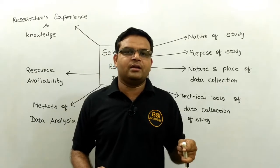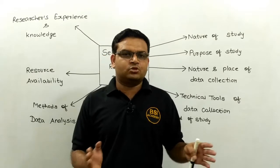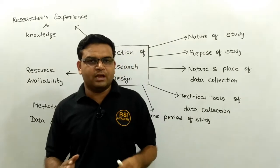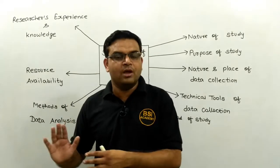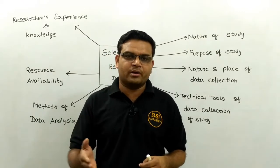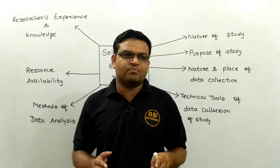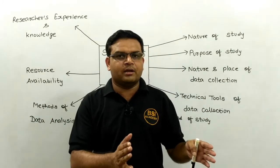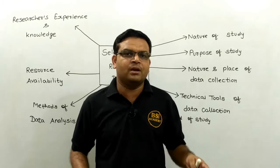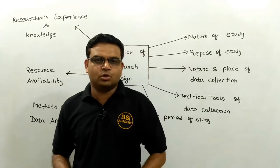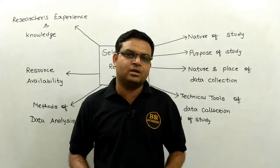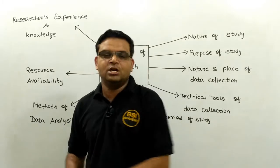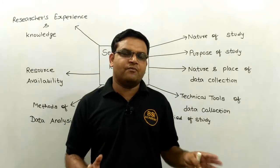The next important criterion is time of study. Many people complete their study in three months, some in six months, because their nature of study is quite different. For example, if you are doing a doctorate degree, you have a time framework in mind — you want to complete your research in three to four years. So you will choose that particular research design in which you can complete your research within that time duration. Time of study plays a very important role.